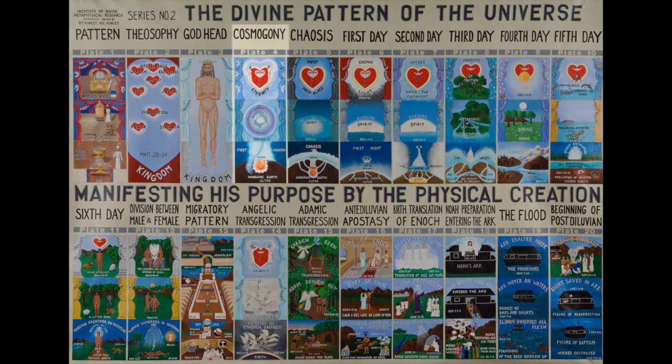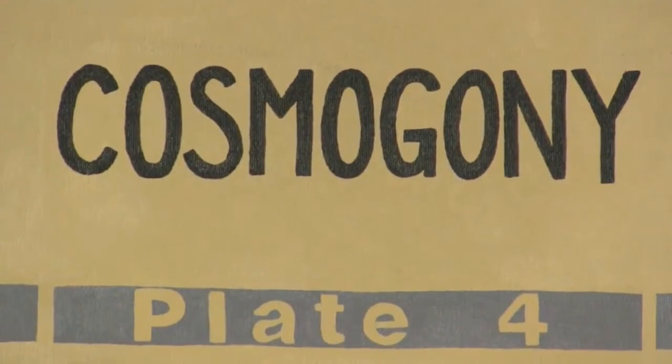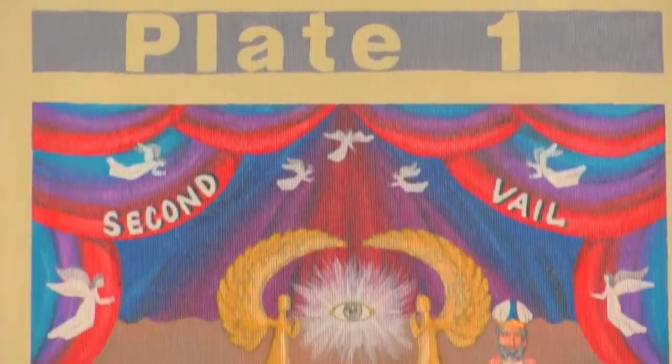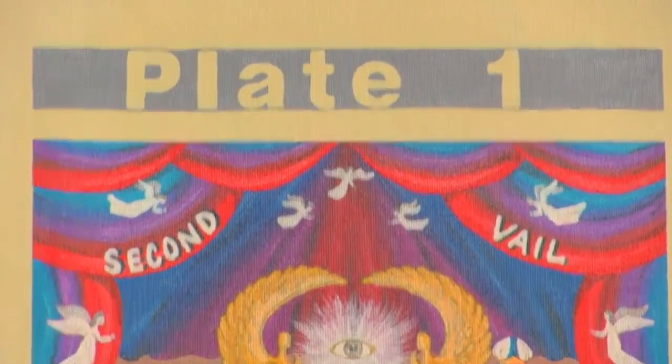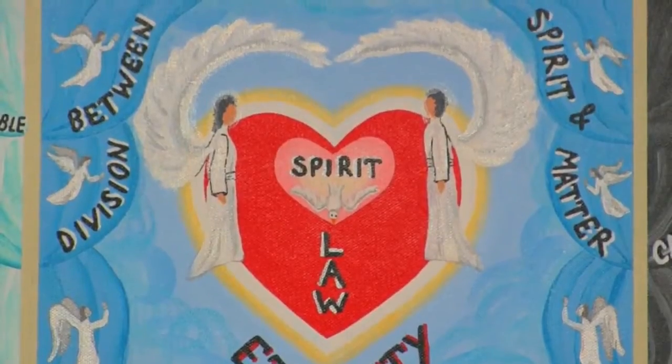Cosmogony Plate number 4 illustrates the generations of the heavens and the earth, called Cosmogony, an exposition of the creation as compared to the pattern of the tabernacle in plate 1.